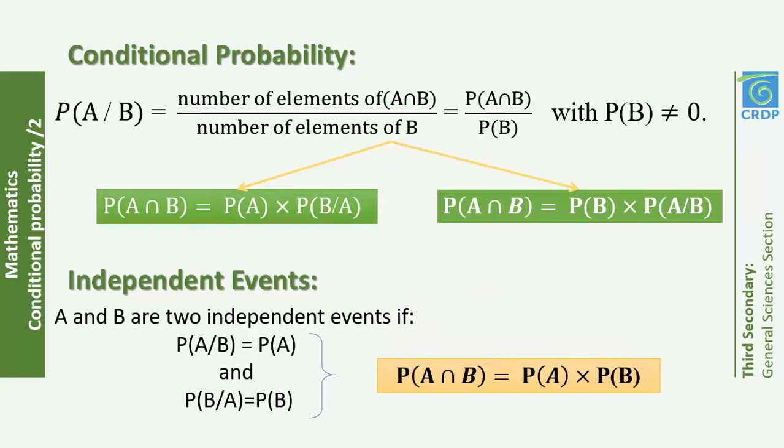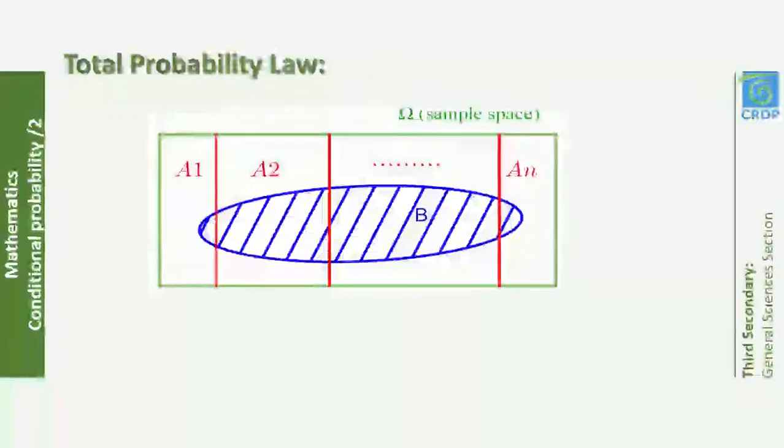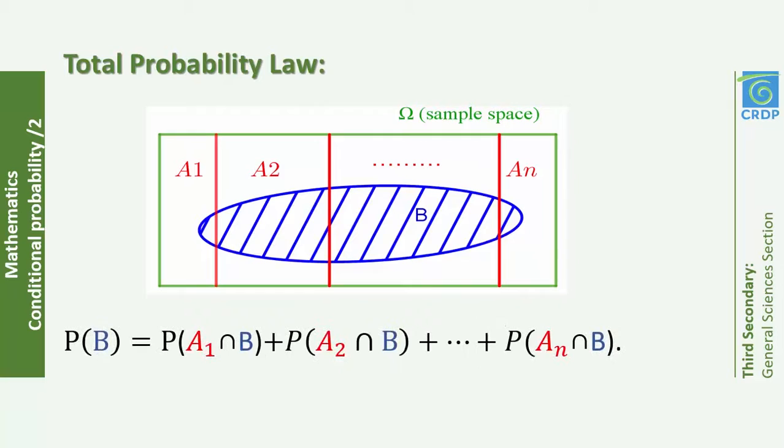Regarding the total probability law: let A₁ through Aₙ be events in a sample space, and B an event sharing outcomes with each of those events. Then P(B) = P(A₁∩B) + P(A₂∩B) + … + P(Aₙ∩B).